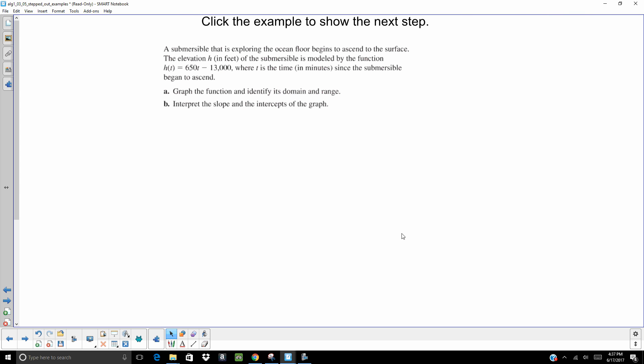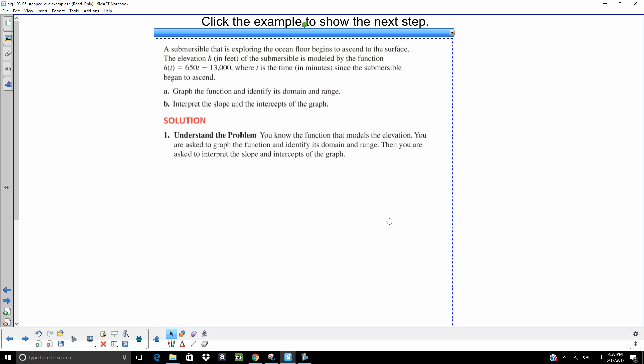Alright, let's do a word problem. A submersible that is exploring the ocean floor begins to ascend to the surface. Ascend means to go up. The elevation h in feet of the submersible is modeled by the function h of t equals 650t minus 13,000. Where t is the time in minutes since the submersible began to ascend or since it began to go up. Graph the function, identify its domain and range, and interpret the slope and the intercepts. So, let's understand this problem. We know that the function models the elevation. We are asked to graph the function and identify the domain and range and interpret the slope.